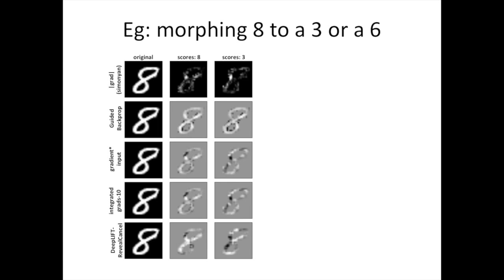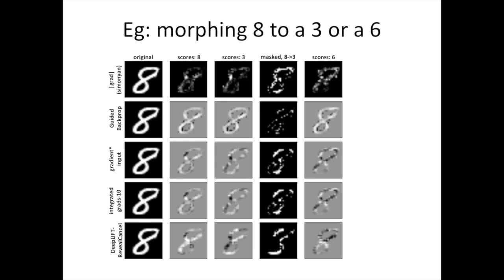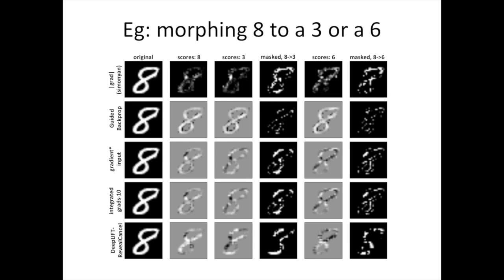If we then erase the top pixels that were more important for class 8 than for class 3, this is what we get. Now let's look at the results when morphing the digit into a 6. Here are the scores for class 6, and here are the results from erasing the top pixels that were more important for class 8 than for class 6.